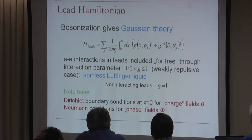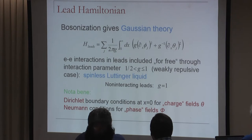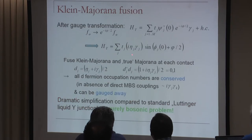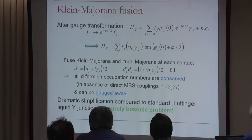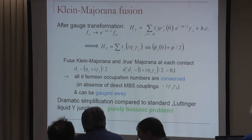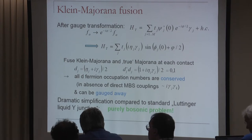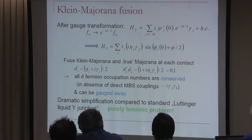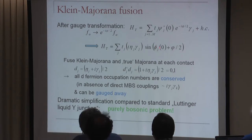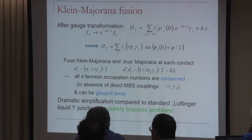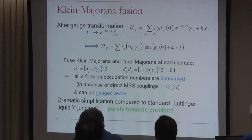We have Dirac-like boundary conditions for the theta field related to charge. The tunnel Hamiltonian gives exactly parity products of Majorana and Klein Majorana fermions. Since this is a conserved quantity and can be gauged away, we obtain a purely bosonic problem in terms of the phase fields of the leads, where phi is the superconducting phase field on the island and we have M phase fields at the contact positions as our degrees of freedom.